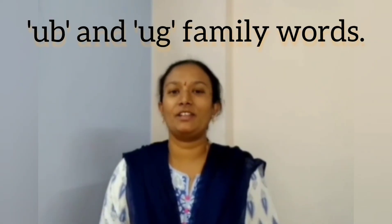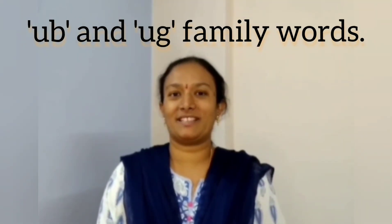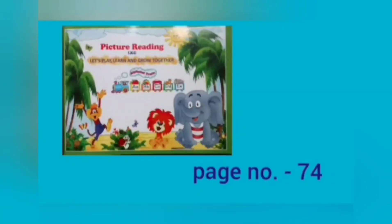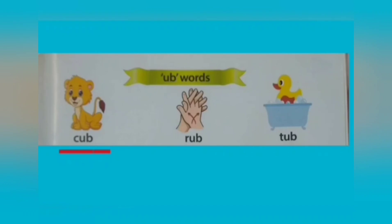Very good children. Now let us learn about UB and UG family words. UB family words: U sounds A, B sounds B, U and B together sounds UB. Let us see the pictures in our picture reading book on page number 74. K, up — cup. R, up — rub. T, up — tub.